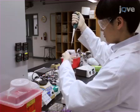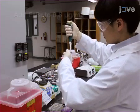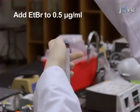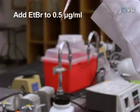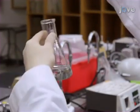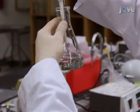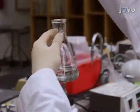Next, add ethidium bromide to a concentration of 0.5 micrograms per milliliter. It is important to note that ethidium bromide is a carcinogen, so gloves should always be worn when handling gels containing ethidium bromide.